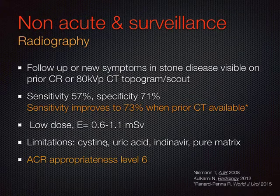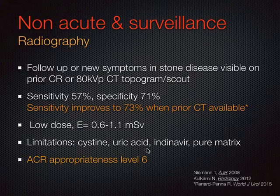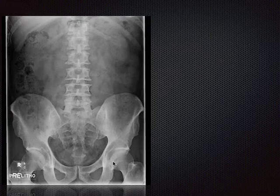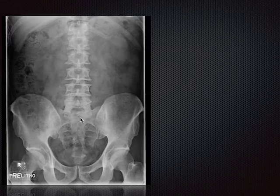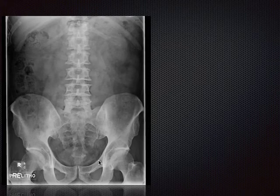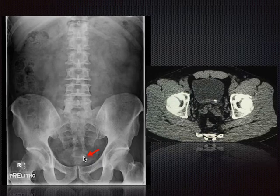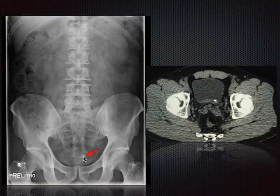There are limitations, of course. Cystine stones tend to be ground-glass density and can be difficult to detect. There are a number of stones which are purely radiolucent on radiography, including uric acid, Indinavir, and pure matrix, which is relatively rare. Here's an example: a patient referred for lithotripsy with a left-sided stone—on the radiograph we're not seeing anything definite. Reviewing the previous CT showed the stone was impacted in the ureter distally, so that was targeted. Often you can get away without repeating the CT.